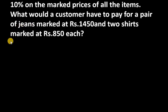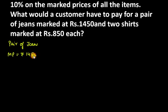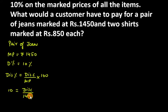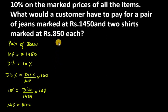Let's start with the pair of jeans. The marked price (MP) is rupees 1450 and the discount percentage is 10%. Using the formula: Discount% = (Discount / MP) × 100, we get 10 = Discount / 1450 × 100. Cancelling the zeros, the discount on jeans comes out to be rupees 145.